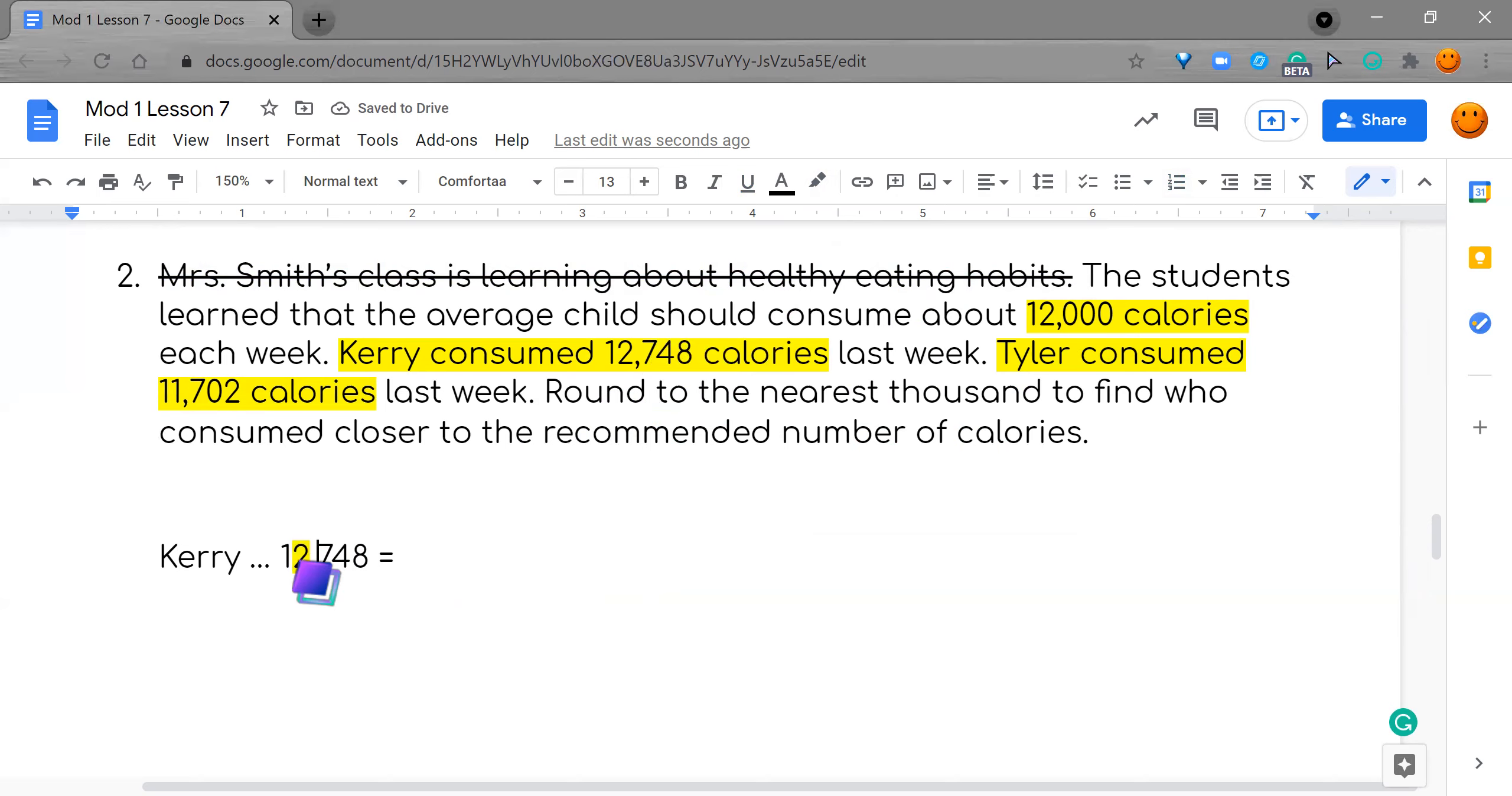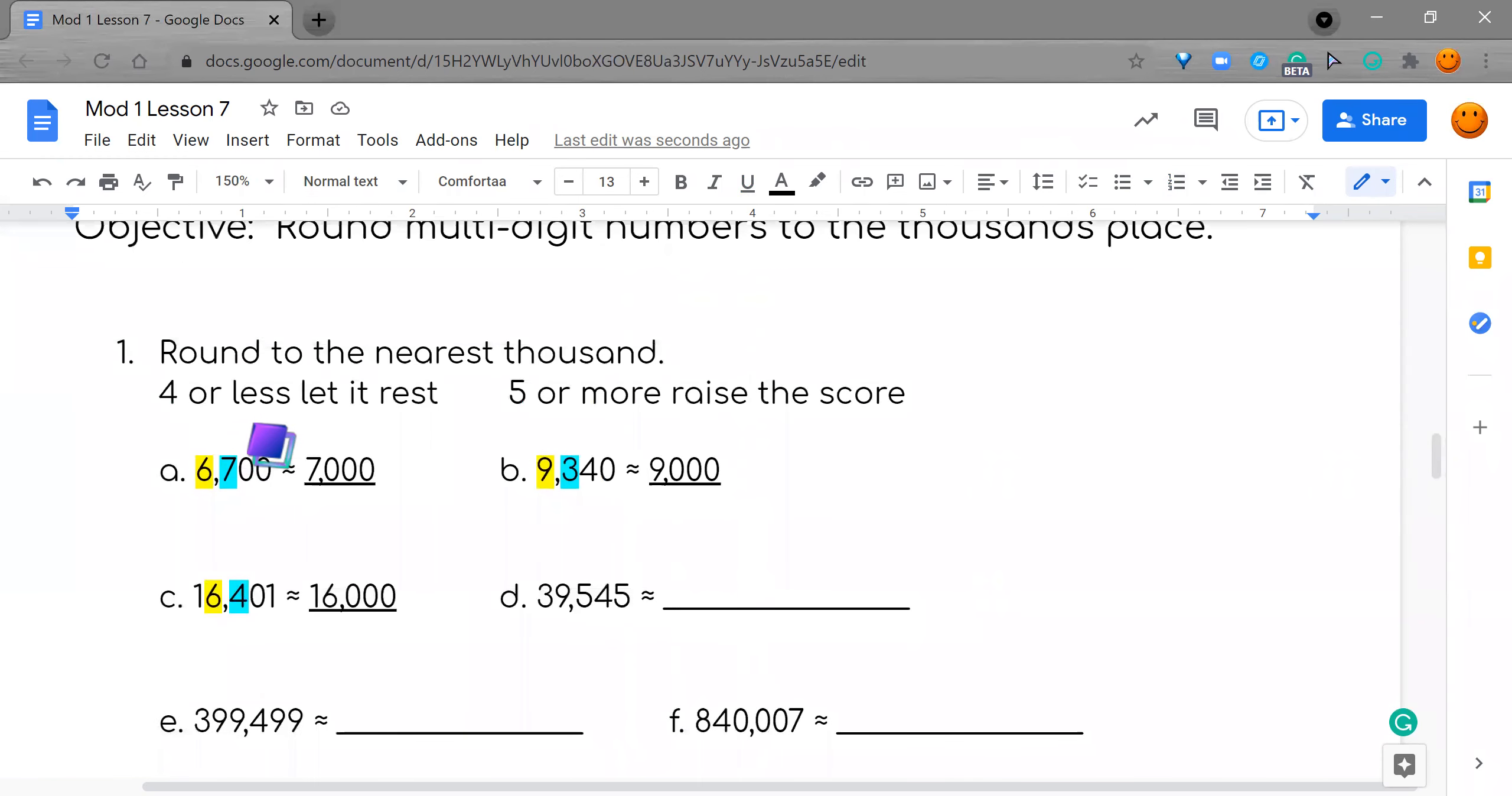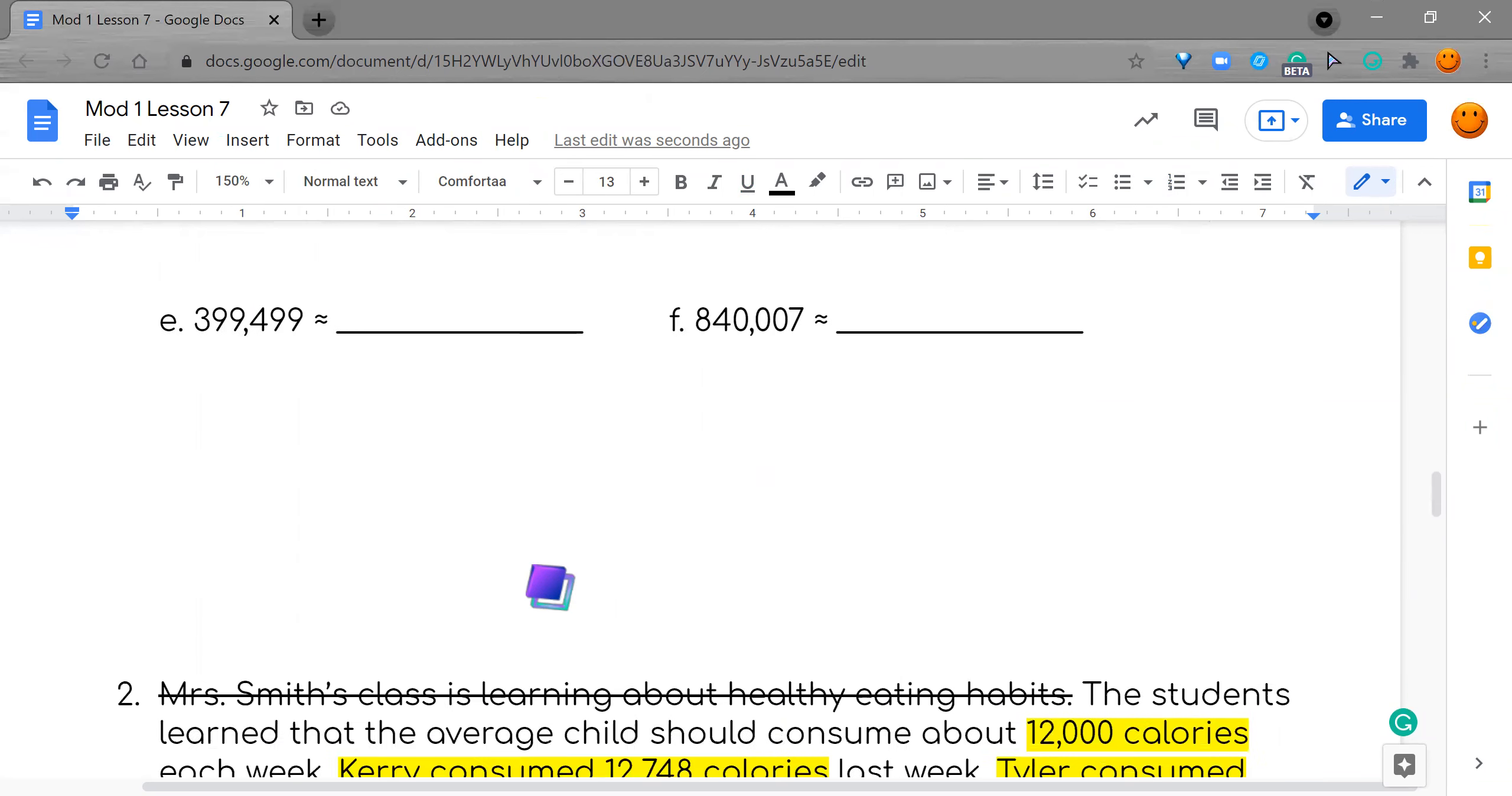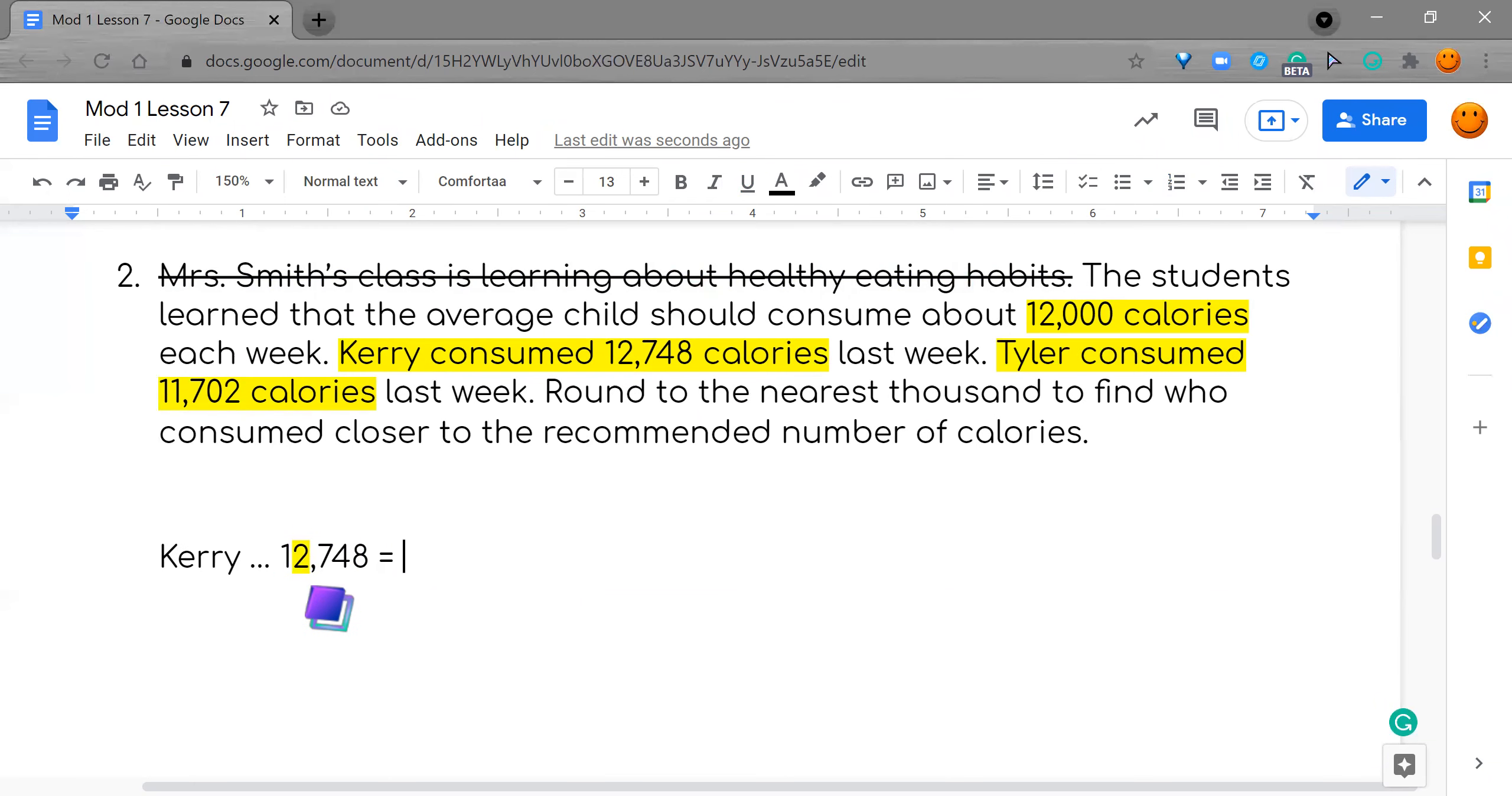So we'll say Kerry consumed 12,748 calories. I'm going to use the regular equal sign and know that it's not an exact number. So it said I have to round to the thousands. I'm going to highlight my two right here for Kerry. And now I have to go to the seven. Is a seven asking the two to raise its score or let it rest? Let's go back up top and look at our numbers. Four or less, let it rest. Five or more, raise the score. Seven's saying raise the score. So my one comes over because we didn't affect that, and my two gets raised. And then put zeros in its place. So I put three zeros. That's Kerry.